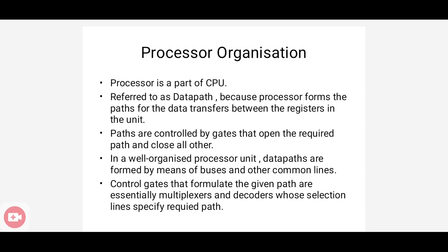We are now looking at processor design and how to organize the processor and its architecture. The processor unit comprises the processor plus control unit. The digital system consists of the processor unit with registers and micro-operations, where the micro-operations are performed by means of the ALU. There is also a multiplexer and decoders used for selecting these buses and common lines.